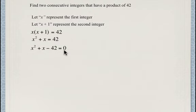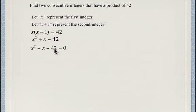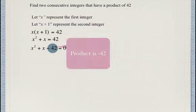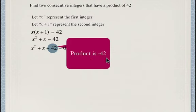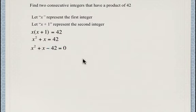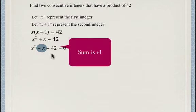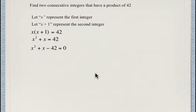Now we need to find values of x that make this equation true. The easiest approach is factoring. To factor x squared plus x minus 42, we look for two numbers with a product of negative 42 and a sum of positive 1, which is the coefficient on the x term. We set up a chart to find those two numbers.